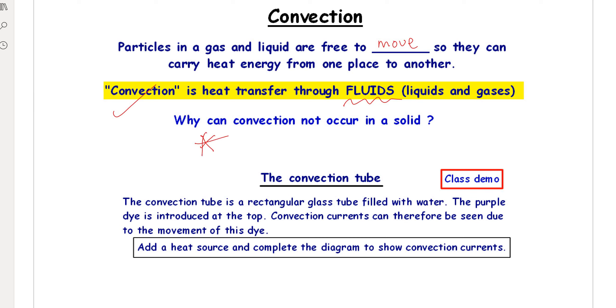Why can convection not occur in a solid? The particles are fixed, they are not free to move. You get to write that in right there.